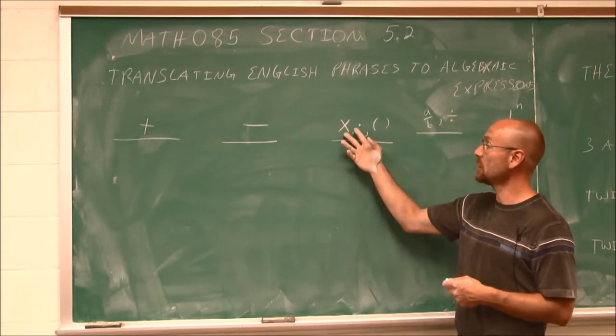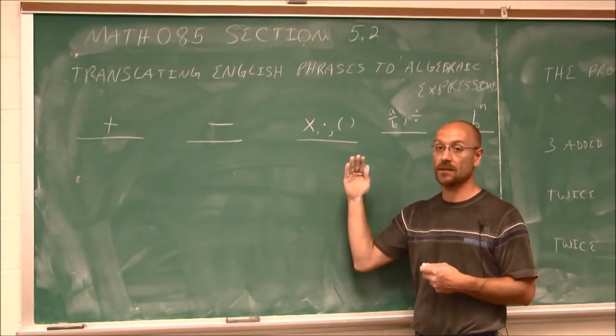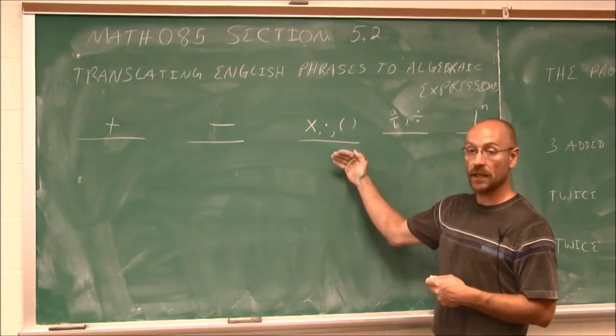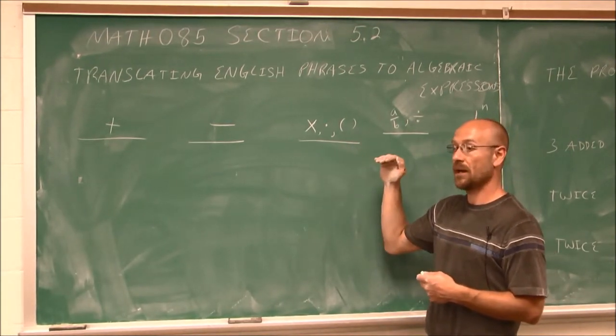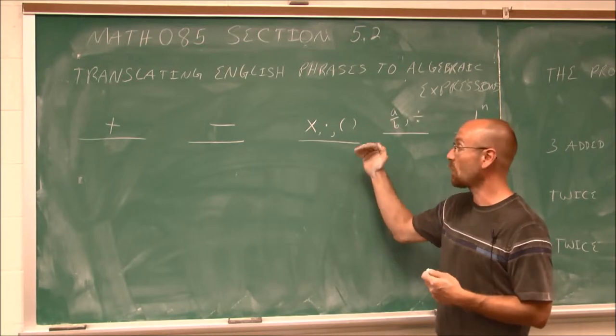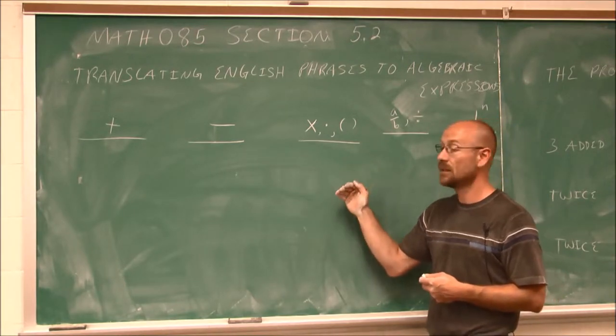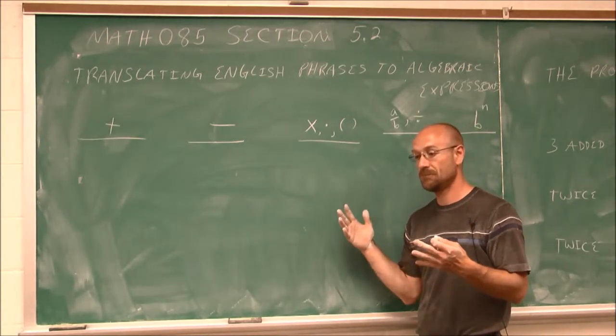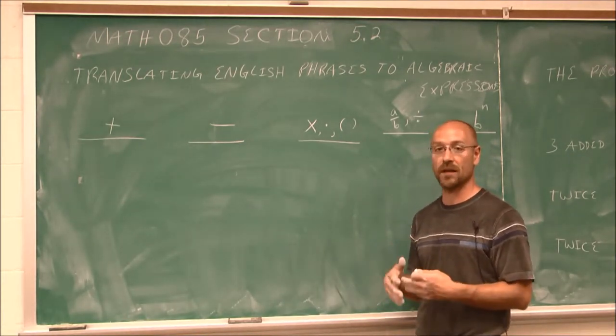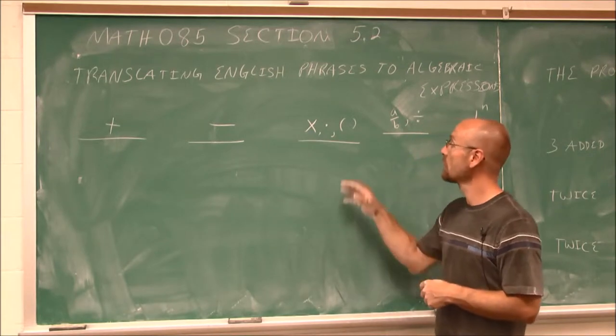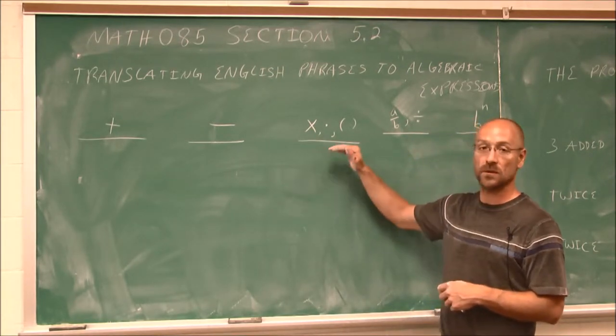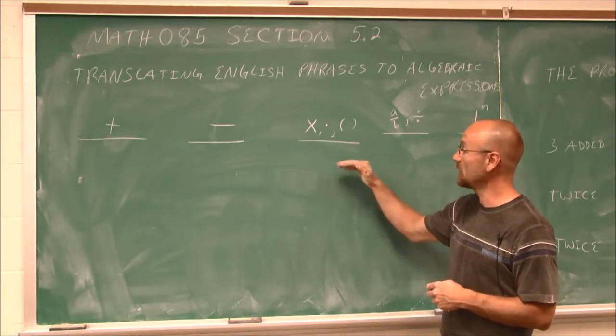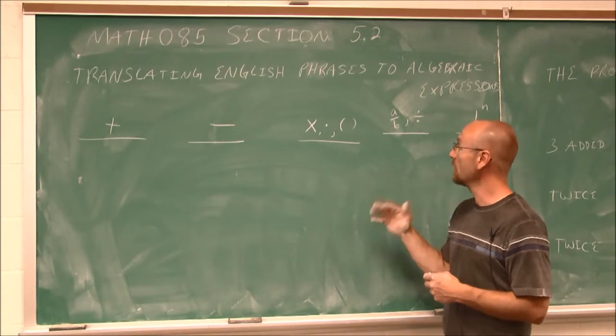Here, we have different operators that indicate the same thing: multiplication. We might have product, times, and the word of. So if I have five of six items, I would have a total of 30 items. So we look for those words to multiply, or to find the product, or times, or of.